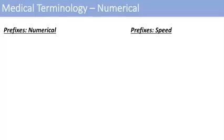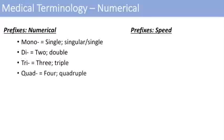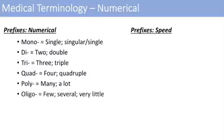Getting into some numerical prefixes, mono just means single or singular. Di means two or double. Tri means three or triple. Quad means four or quadruple. Poly means many or a lot. And oligo is a blanket term that means just a few, several, or very little.